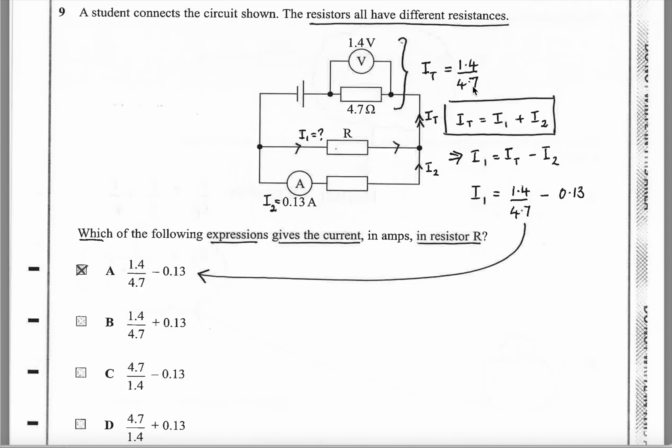We know from the values given here that total current must be voltage divided by resistance. So we know it's 1.4 divided by 4.7. They want us to work out what is the current in the first path, so I call it I1. I total must be equal to I1 plus I2. Or you could rearrange it, make I1 the subject. I1 is IT minus I2. The total current we've worked out is that. Then you take away the 0.13 and the answer is A.